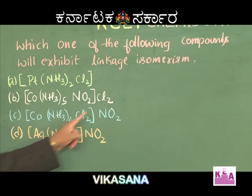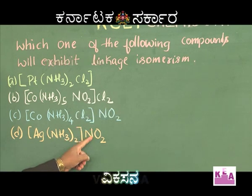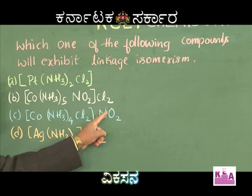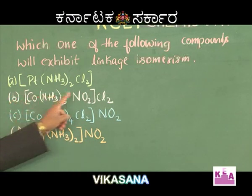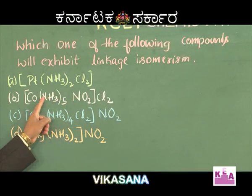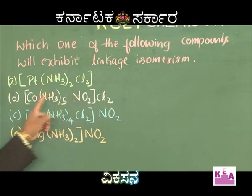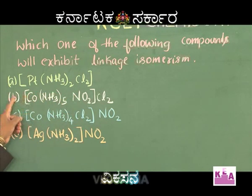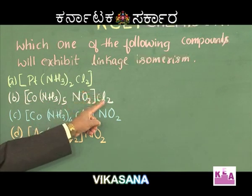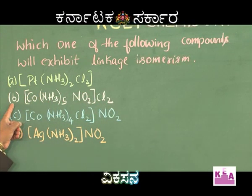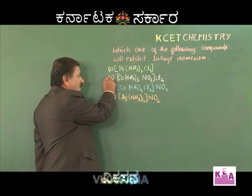Options C and D also have NO₂, but remember that in those complexes NO₂ is present in the ionization sphere — it is not acting as a ligand. Since complex B has NO₂ as a ligand, it can link through nitrogen or through oxygen. Therefore, [Co(NH₃)₅NO₂]Cl₂ (Option B) can exhibit linkage isomerism. The correct option is Option B.